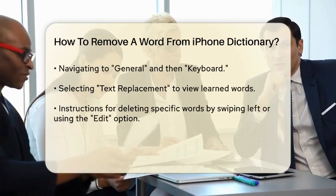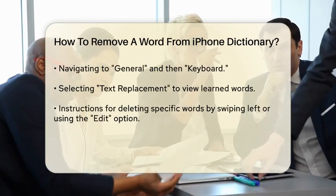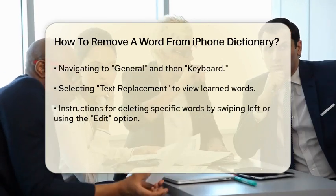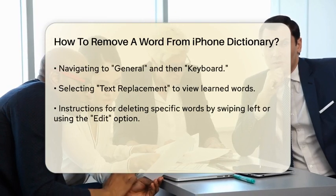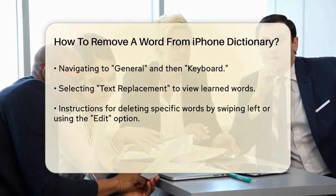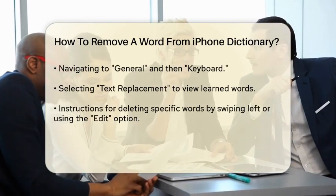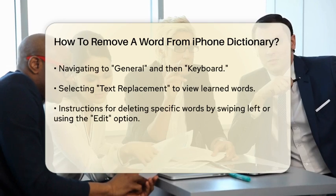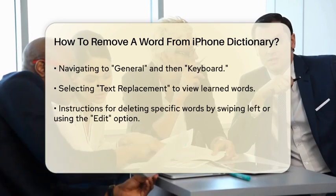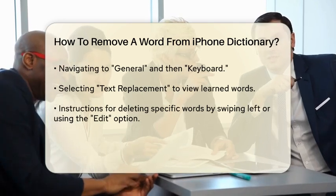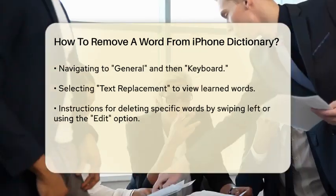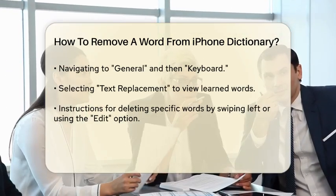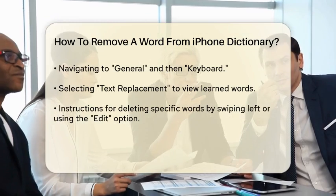Select Text Replacement. Here, you'll see a list of words that your iPhone has learned. If the word you want to remove is in this list, you can delete it. To delete a word, swipe left on the word and tap Delete. Alternatively, tap Edit in the lower left corner, select the red circle icon next to the word, and then tap Delete followed by Done.